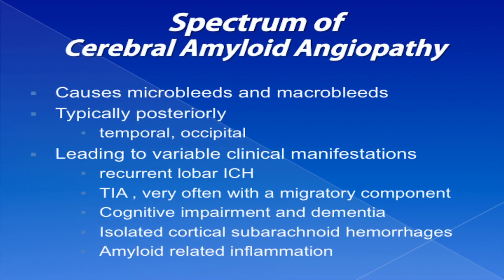Amyloid angiopathy most classically gives rise to recurrent cortical hemorrhages — typically posteriorly, temporally, and occipitally located — but there are other manifestations as well. It can give rise to TIA-like migratory symptoms that mimic seizures but probably are not. There is also cognitive impairment and dementia, isolated cortical subarachnoid hemorrhage relevant in this context, and a very rare condition where blood deposits cause inflammation — amyloid inflammation — treated with immunosuppression.